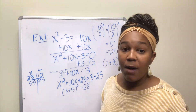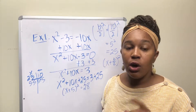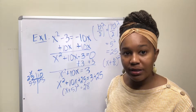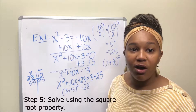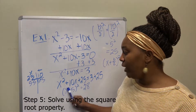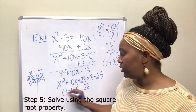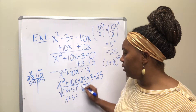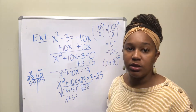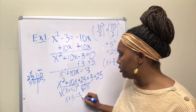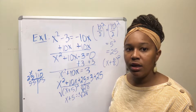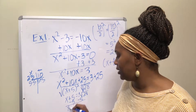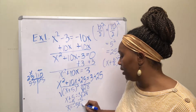We've rewritten the quadratic so it has only one variable. Once it has only one variable, you can solve by isolating that variable. This is step five — solving using the square root property. To get rid of the square, take the square root of both sides. Whenever you take the square root, you take the plus or minus square root. So you get x plus 5 equals plus or minus the square root of 28. Then subtract 5 from both sides to get x equals negative 5 plus or minus the square root of 28.